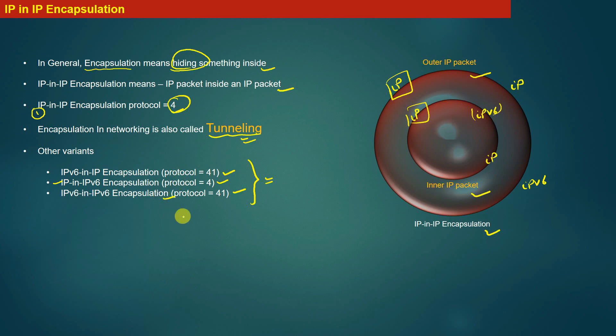In general, encapsulation or tunneling means you have a packet where the payload part is actually another packet, which in turn has its own payload.